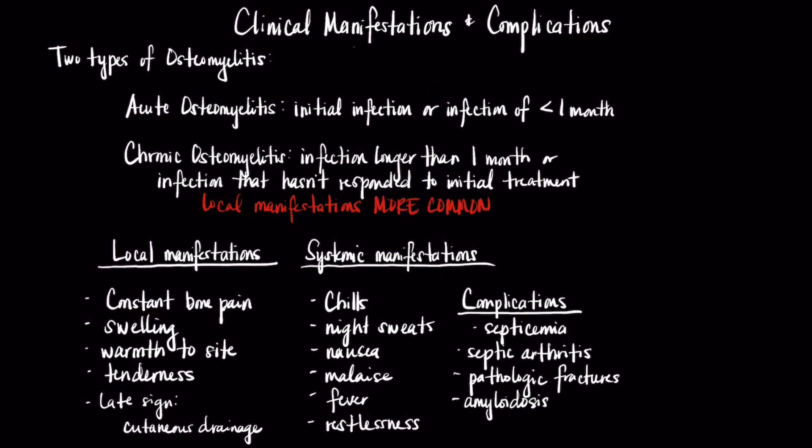There are two types of osteomyelitis: acute and chronic. Acute osteomyelitis pertains to initial infection or any infection that lasts for less than a month. Both local and systemic manifestations are typically present. Local manifestations include bone pain unrelieved by rest that increases with activity.